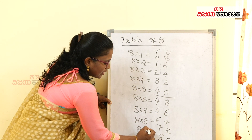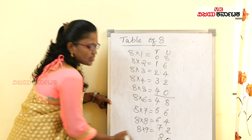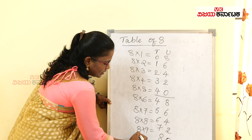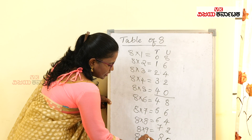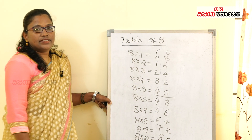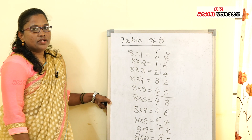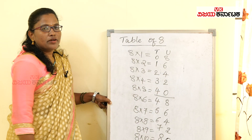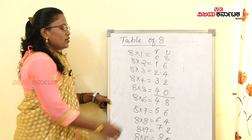8 × 8 is 64. 8 × 9 is 72. And finally, 8 × 10 is 80. So I will just repeat the important pattern here.